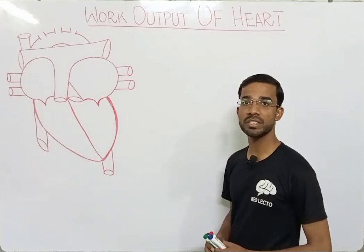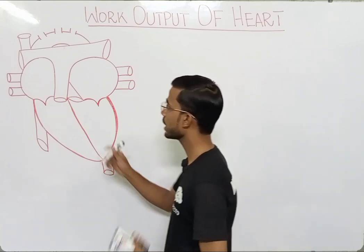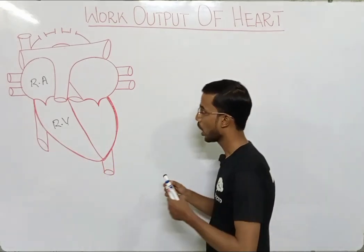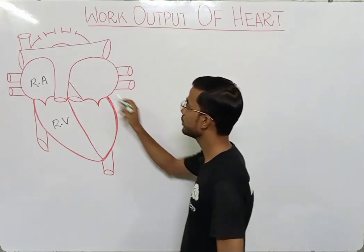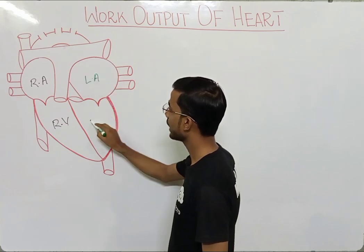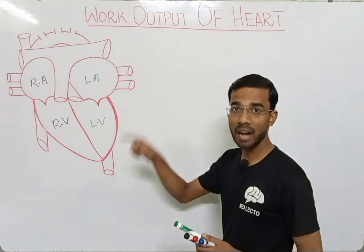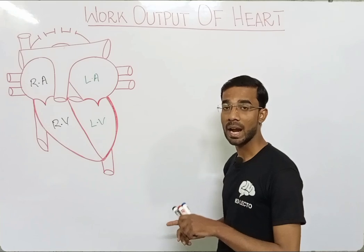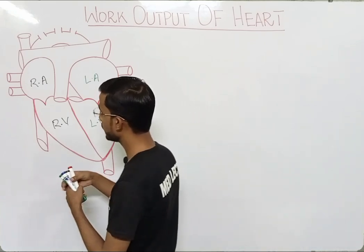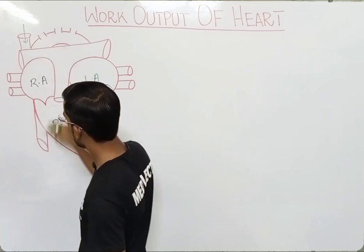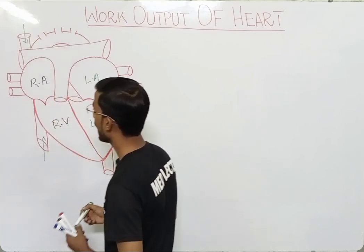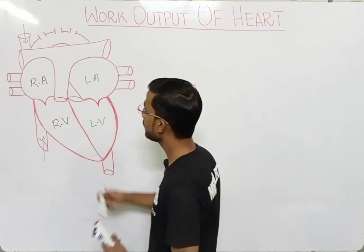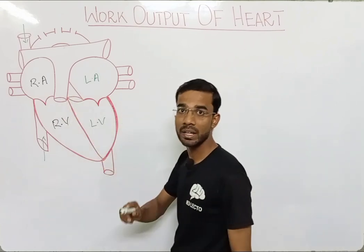First of all we will revise the different chambers of the heart. If you see here, at the right side you will see the right atrium and the right ventricle. On the left side you will see the left atrium and the left ventricle. At the right side there are two pathways through which the blood enters into the heart: the superior vena cava and the inferior vena cava. Ultimately, the blood enters into the right atrium, then into the right ventricle, and exits through the pulmonary trunk.